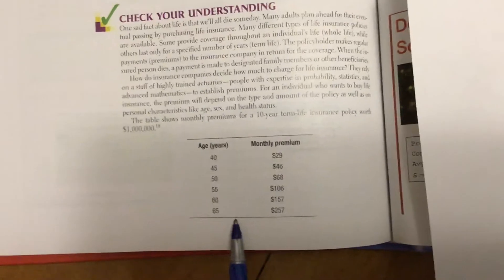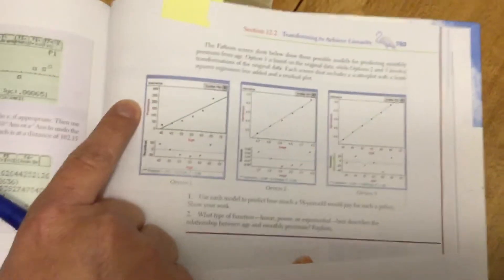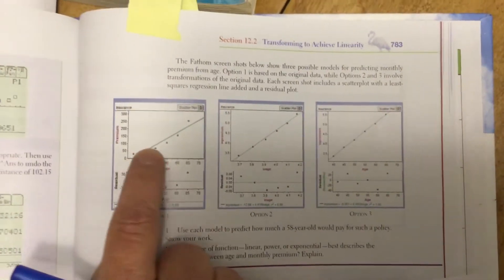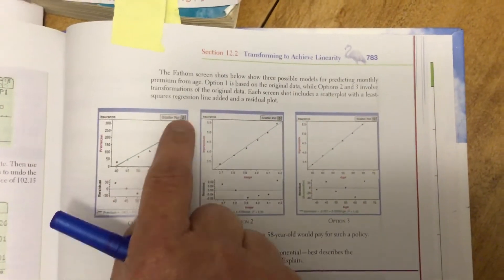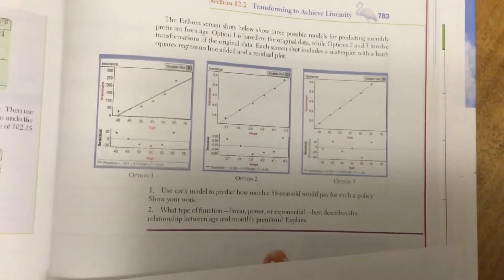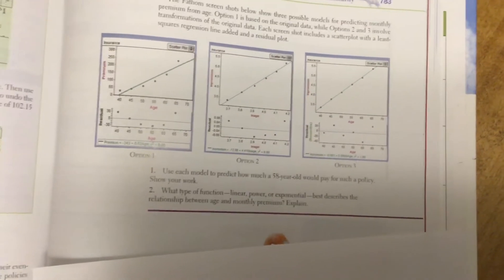So if we plot this data over here, these are my ages and this is my life insurance premium. Now, we can put a least squared regression on it, but you'll notice this data is a little more curved. It would probably be better if we did some sort of exponential regression, but we're not doing that. We're going to do linear regression, so we're going to force it to be linear.